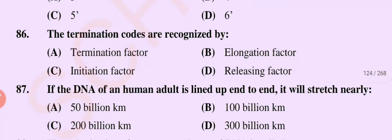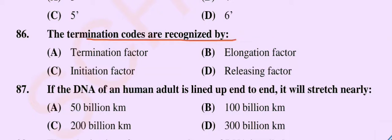Question number 86. The termination codes are recognized by: option A, termination factor; option B, elongation factor; option C, initiation factor; option D, releasing factor. The correct option is option D, releasing factor.